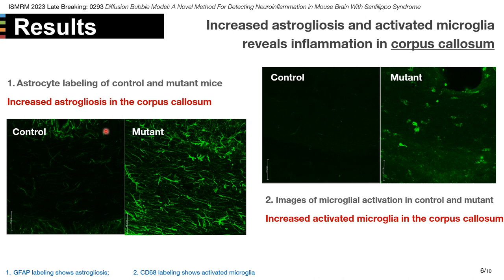From the image on the left, we can see there is increased astrogliosis in the corpus callosum in the mutated mice, comparing to the control mice. Also, we can see increased activated microglia in the mutated mice comparing to the control. From these results, we know inflammation is happening in the corpus callosum.